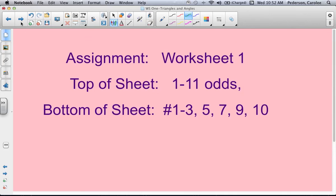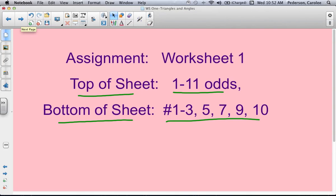Here is what your assignment will be for worksheet number one that you'll be getting in class. The top half of the sheet will do 1 through 11 odds. The bottom part of the sheet will do 1 through 3, 5, 7, 9, and 10.